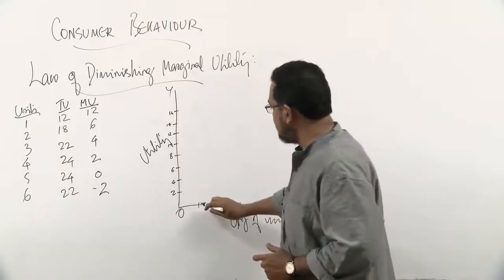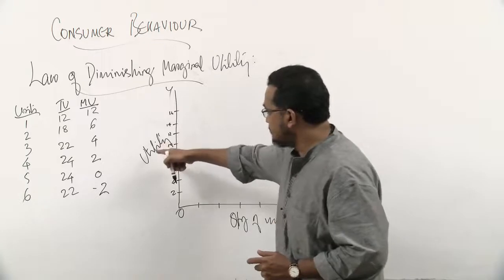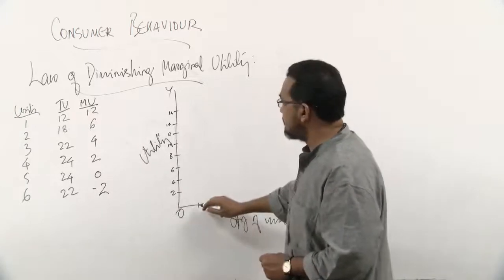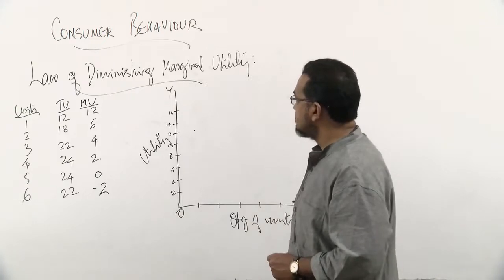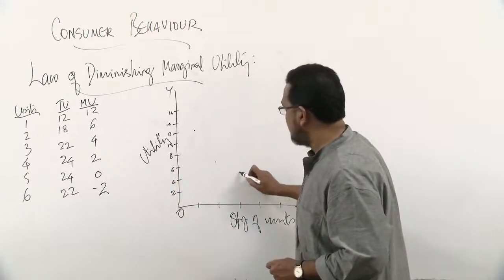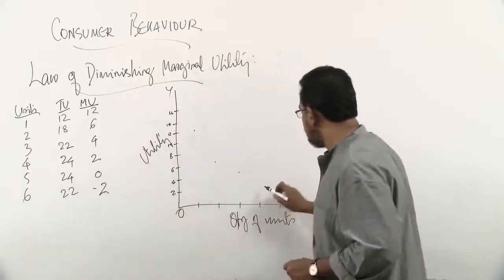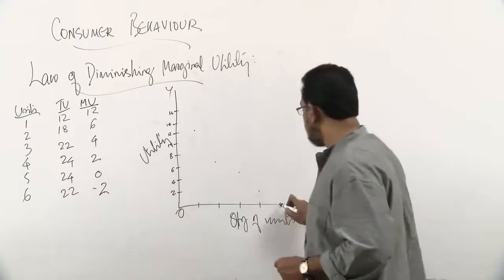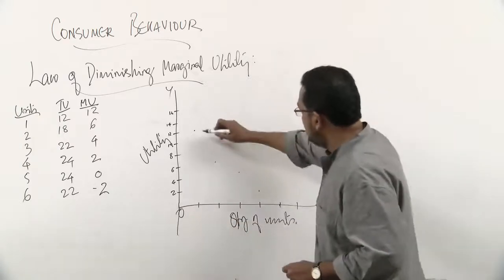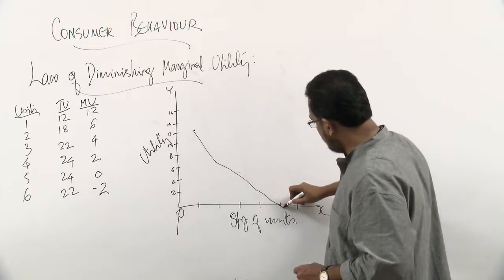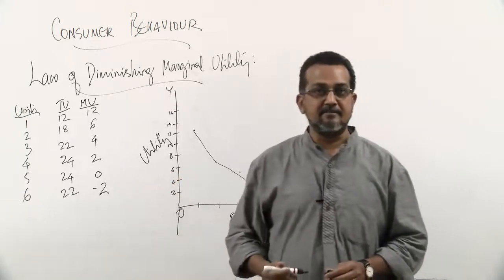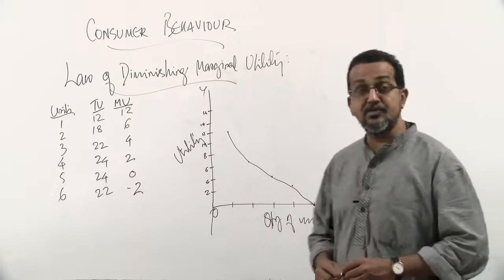Let's plot these values in the diagram. On the x-axis is the quantity of units and on the y-axis is utility. Plotting only the marginal utility values: the first unit gives 12 utils, the second gives 6, the third is 4, the fourth is 2, the fifth is zero, and the sixth goes negative. Therefore, if you continuously consume a certain commodity, after a certain point the utility turns negative.